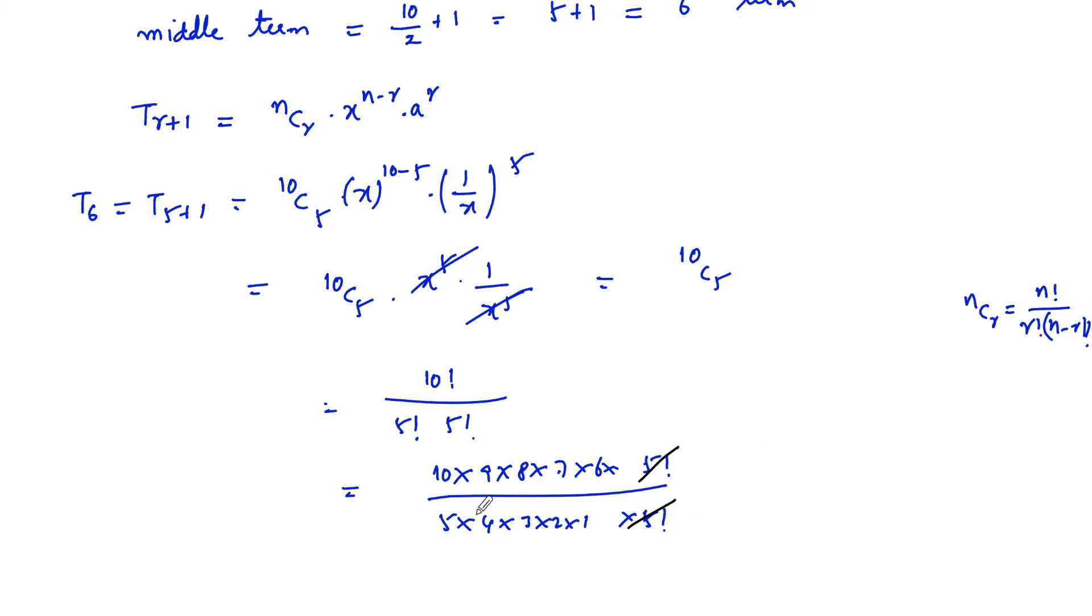And we can cancel certain terms: 5 into 2 is 10, and 3 times 3, and 4 times 2 is 8. So we have 3 into 2 is 6, 6 sevens is 42, 42 sixes are 252. So 252 is the answer, or we can give the answer 10 c 5.